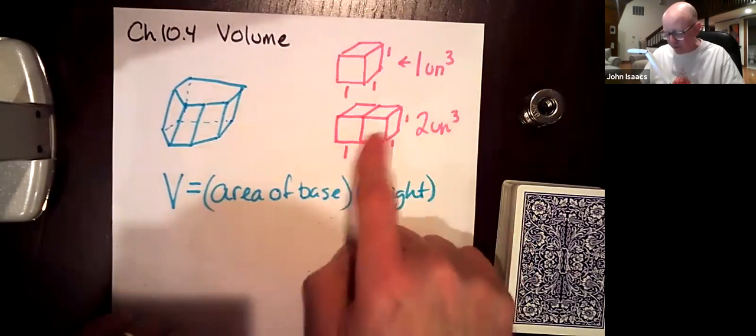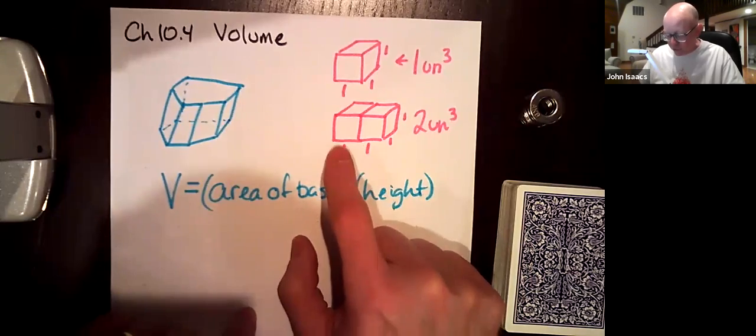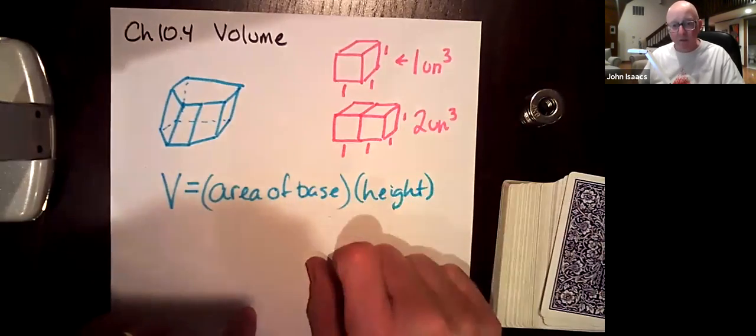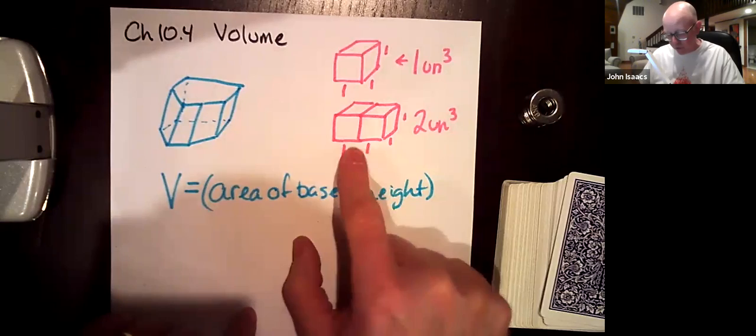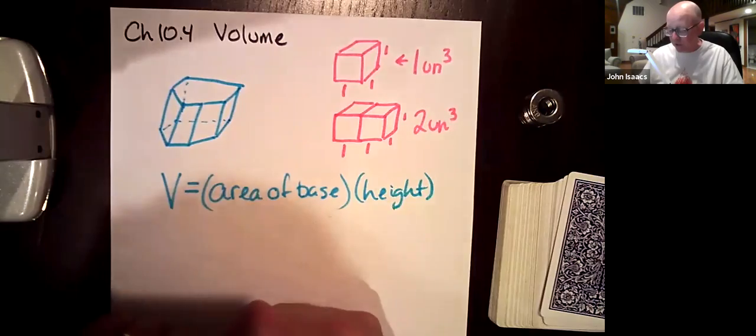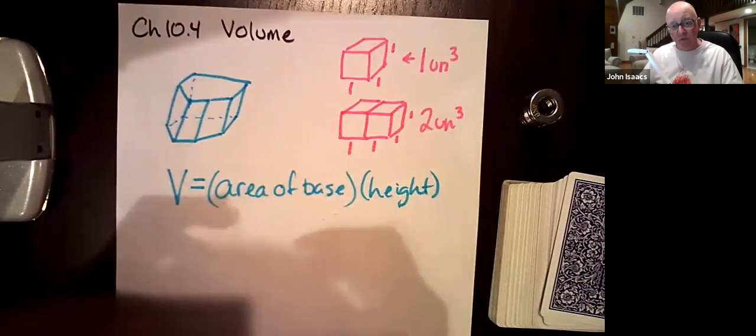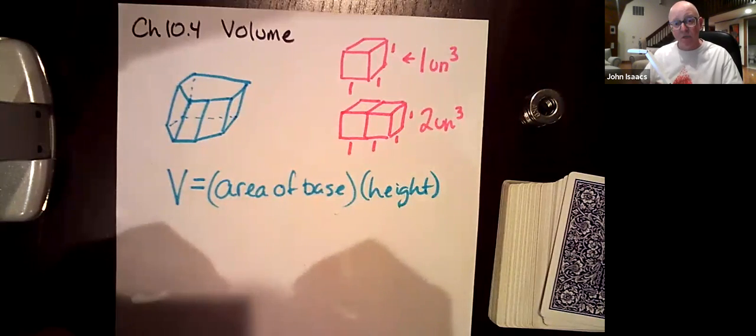If we take another one of those and put it next to it, we would have something that would be two by one by one. It would be two along this edge and then one by one on the other edge, and there we would have two cubes. So that would be two units cubed. Literally, the unit of measure is a cubic unit.